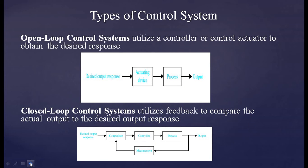Now we will go through the types of control systems. Commonly there are two types: open loop control system and closed loop control system. The open loop control system utilizes a controller or control actuator to obtain the desired response. As the diagram shows, we have a desired output response going to an actuating device which is connected with the process, and we get an output from the process.